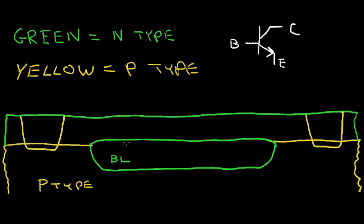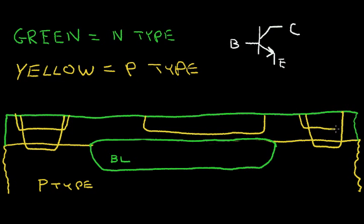The next thing is to do a P-diffusion for the base region of the NPN transistor. I'm going to diffuse in a base region, and at the same time put some of this base region into this deep isolation diffusion as well. Then I'm going to take in some N-material and dope this region with an N-material, putting a higher concentration N-material over here as well.